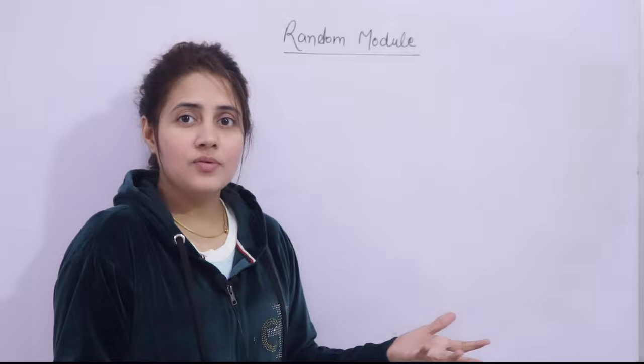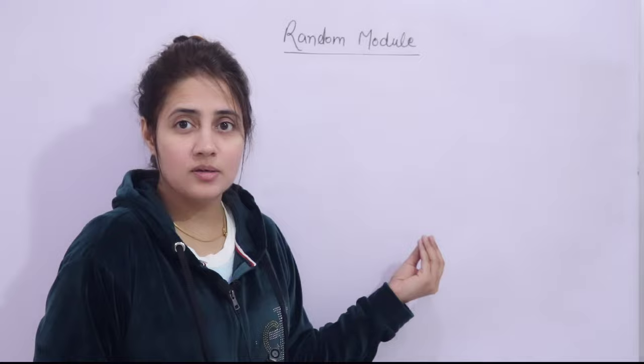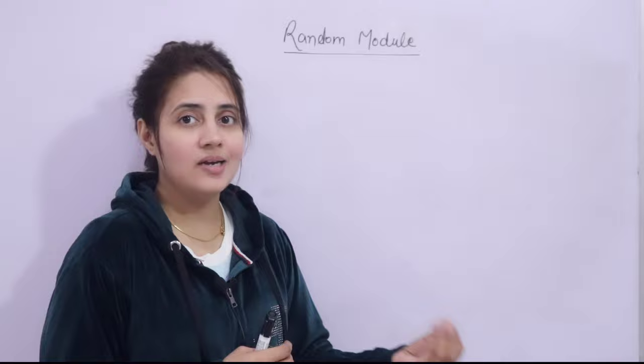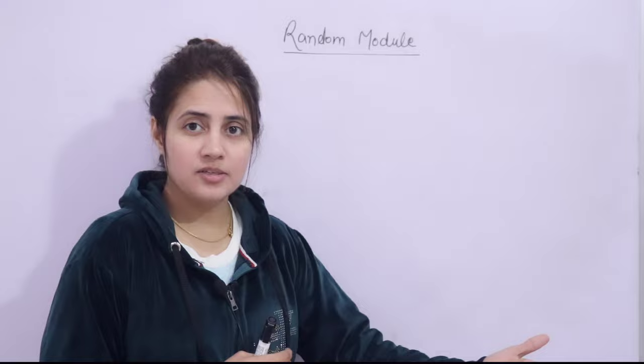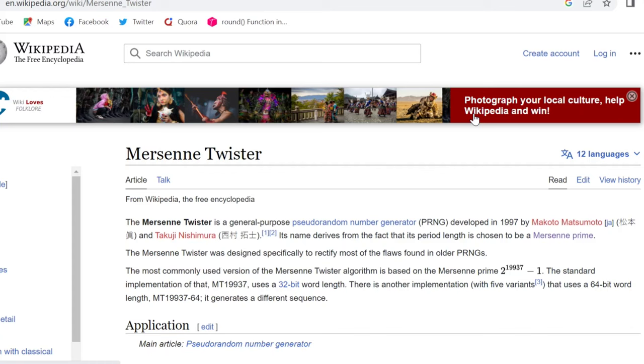If you knew what the next block was, there would be no fun in playing those games — that is what randomization is. When you develop these kinds of games in programming, you also need randomization. In Python there is a built-in module called the random module — you don't have to write all the code and maths behind randomization yourself. Python uses the Mersenne Twister algorithm for a pseudo-random number generator.